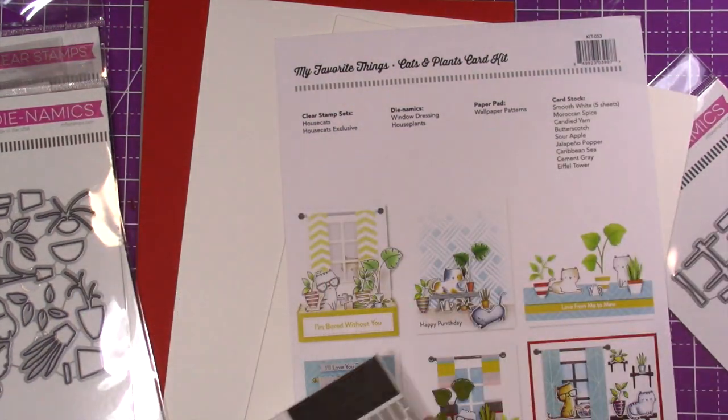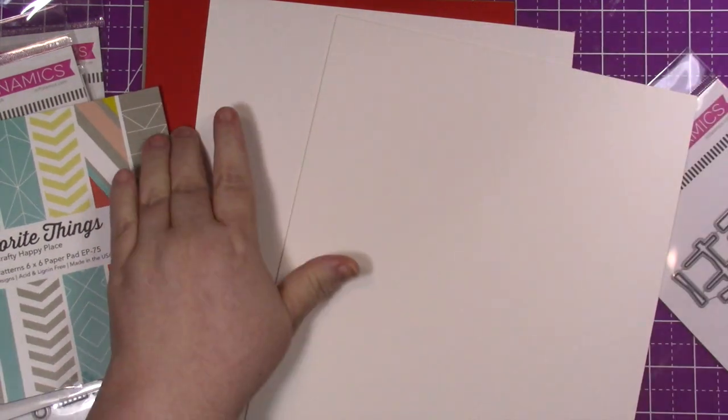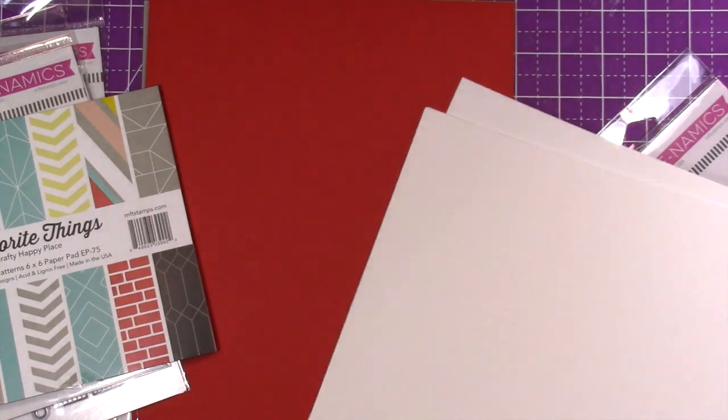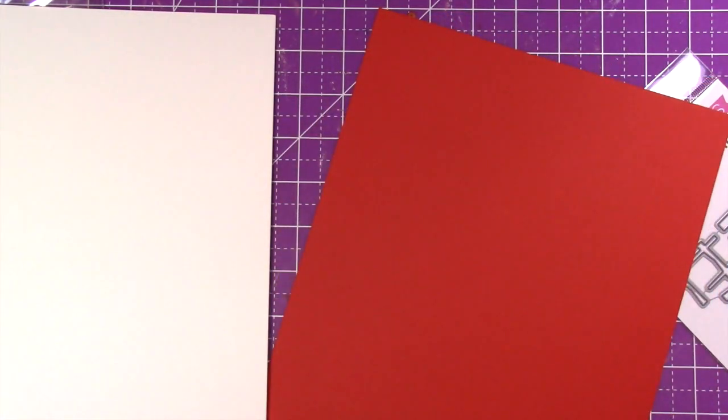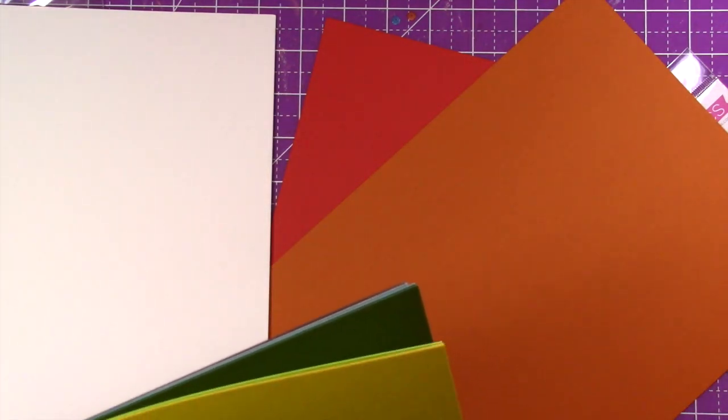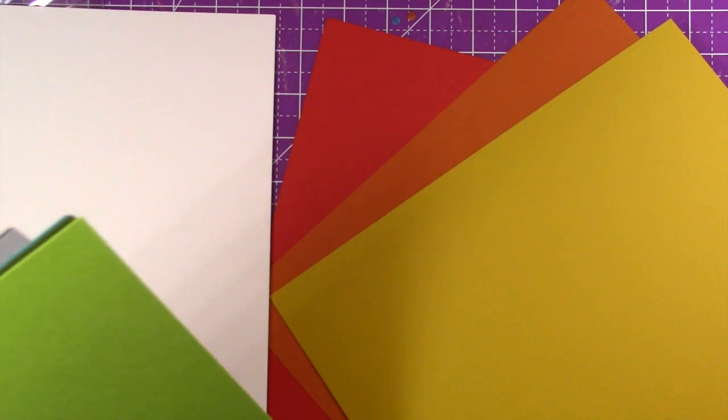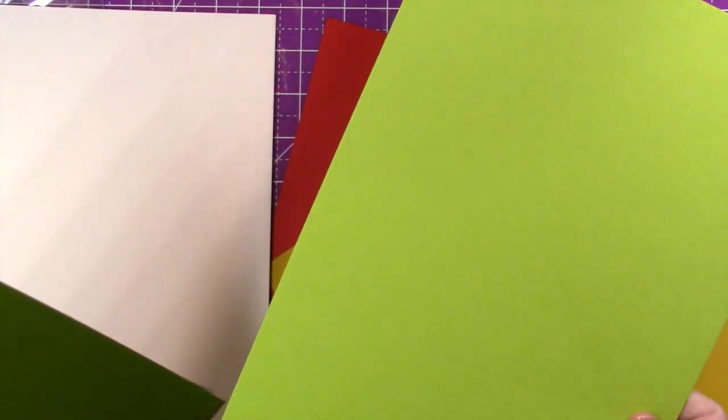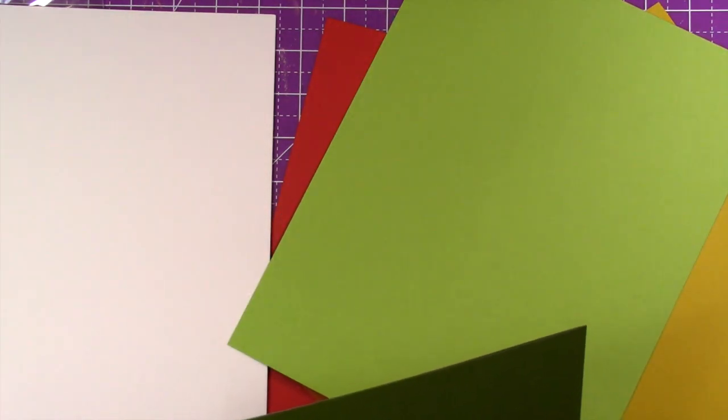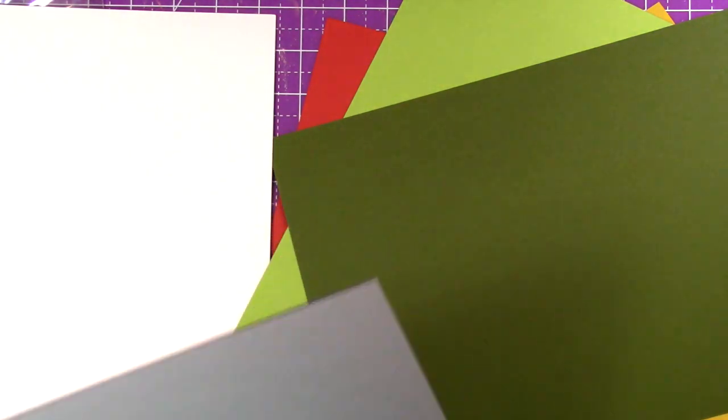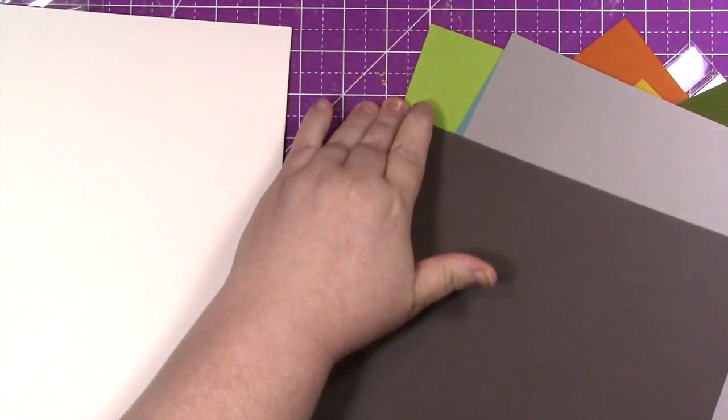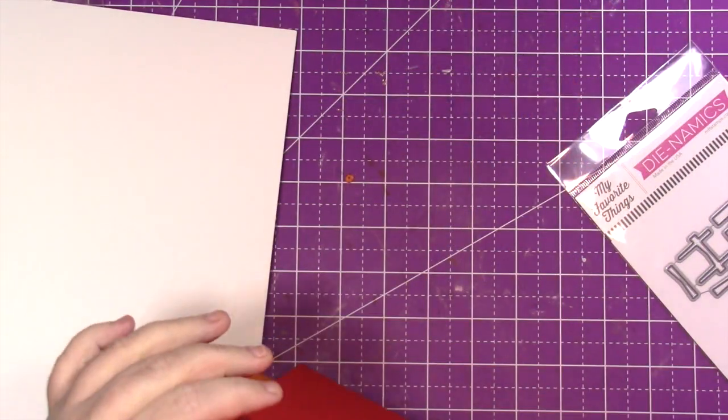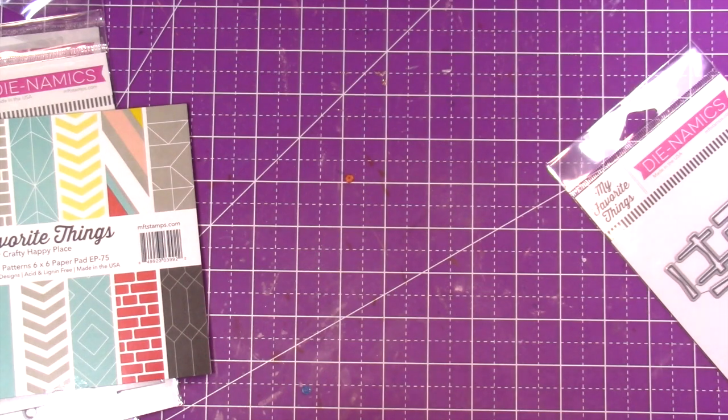And then it comes with some cardstock. You get five sheets of their smooth white. This is their prestige cardstock too, I think it's very thick and heavy. You get Moroccan Spice, Candy Yams, Butterscotch, Sour Apple, Jalapeno Popper, Caribbean Sea, Cement Gray, and Eiffel Tower. I'm gonna have to pick up a package of this because I couldn't really tell what, I knew it was a warm gray but I wasn't sure how warm, and that is a great color.